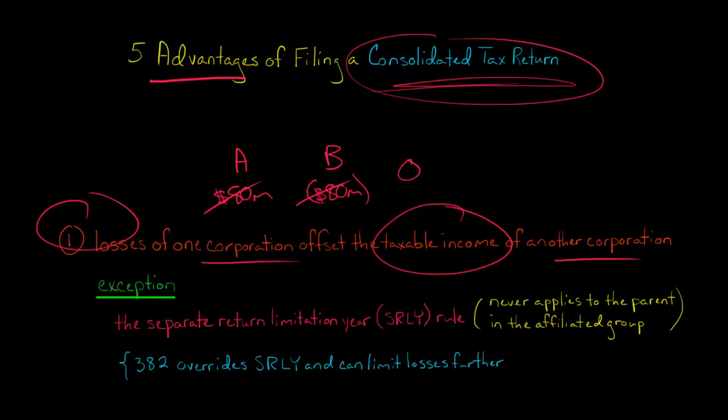Now, there are limitations in terms of taking losses of one of the other members of the affiliated group. So in terms of these net operating losses, if B, for example, in this example, I said B had an $80 million loss this year and A had an $80 million taxable income. But what if another company, C,